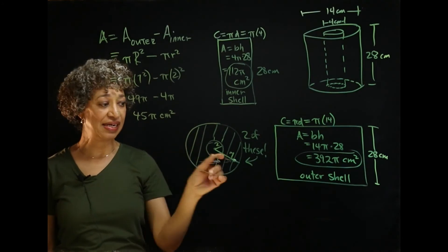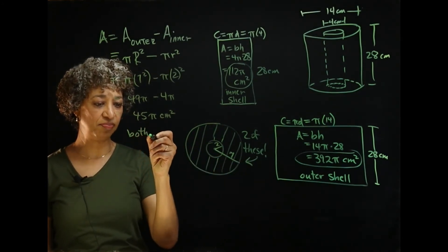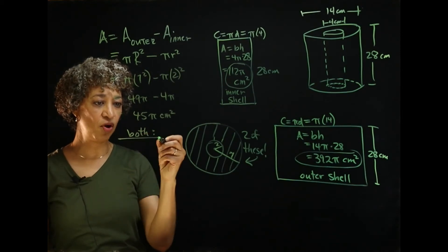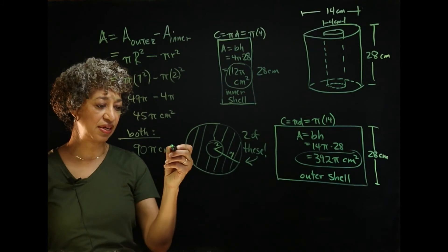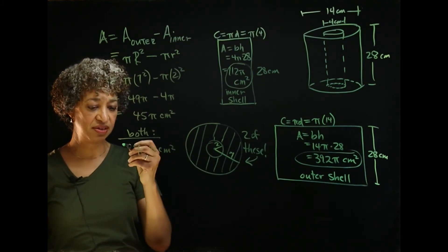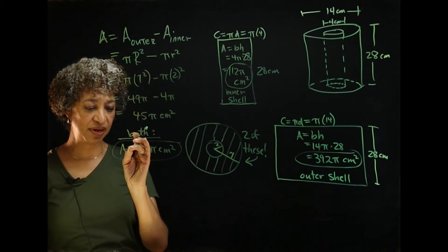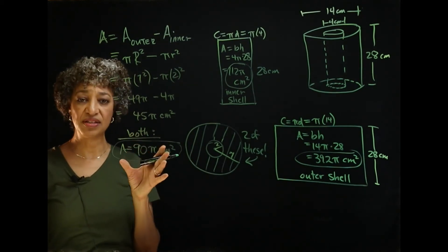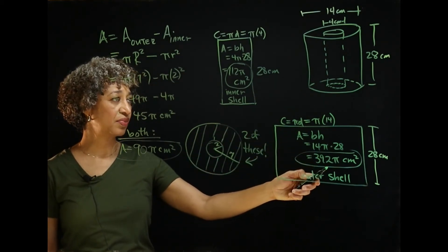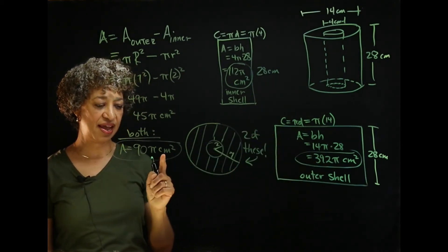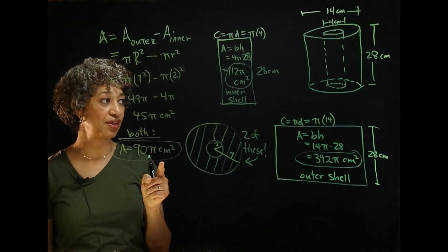But remember, we need two of these. So, I'm just going to double 45 pi. And for both of them, we have 90 pi square centimeters. So, this is the third area that I'm going to have to include to find the surface area of my solid. All right? So, we have outer shell, inner shell, and both ends together.